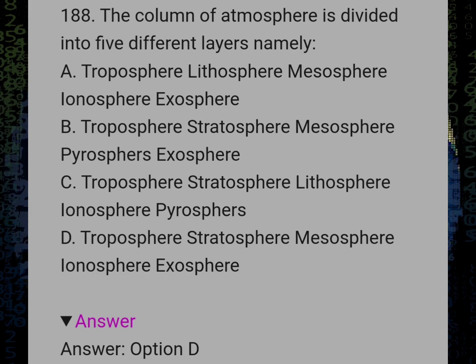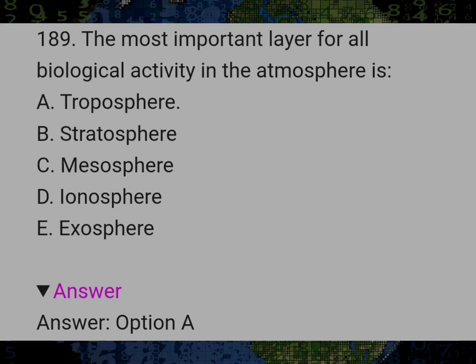The column of atmosphere is divided into five different layers namely? Answer D: Troposphere, Stratosphere, Mesosphere, Ionosphere and Exosphere. The most important layer for all biological activity in the atmosphere is? Answer A: Troposphere.